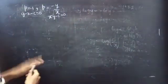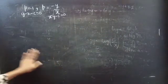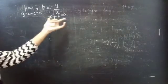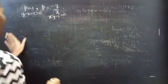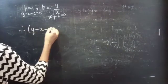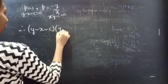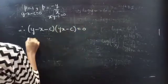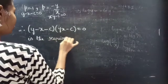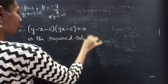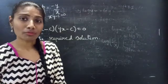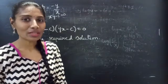The combined form of these two solutions forms the required solution for the given differential equation. Therefore, (y - x - c)(xy - c) = 0 is the required solution. This completes the problem. We have solved it using the solvable for p method. Hope you understood — see you in the next video, bye bye.